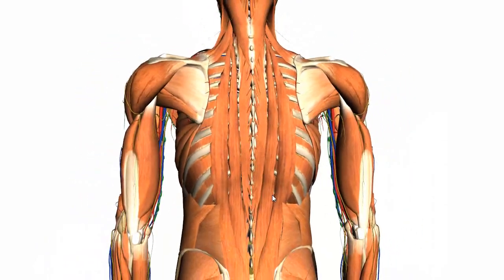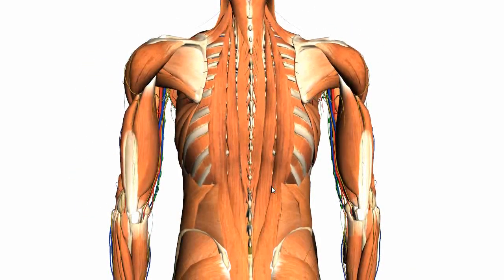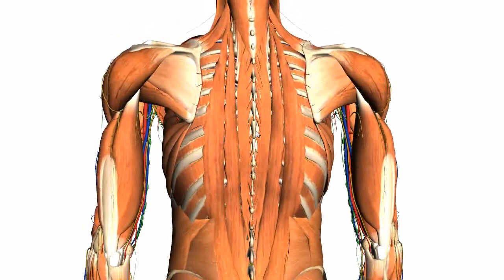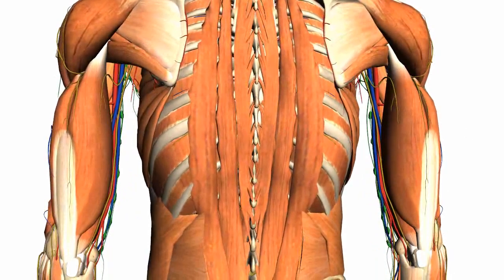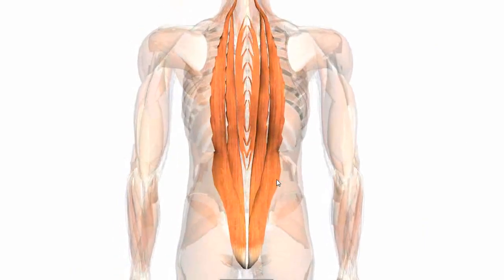Next, I'm going to talk about the erector spinae muscles - the muscles which move the vertebral column. You've got the erector spinae and the transversospinalis muscles. I'll talk about the erector spinae first because they're more superficial, and then move on to the transversospinalis muscles which lie underneath. The erector spinae are the largest group of intrinsic muscles in the back and are the primary extensors of the vertebral column and head. Here are the erector spinae highlighted.